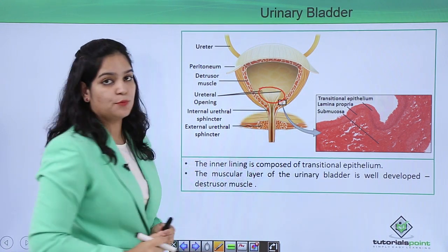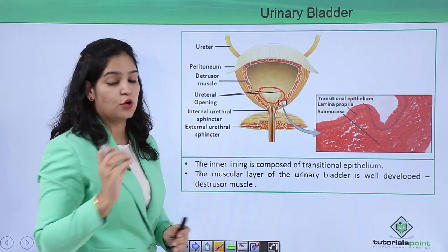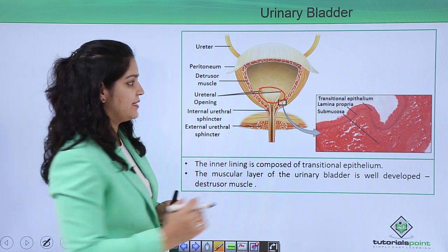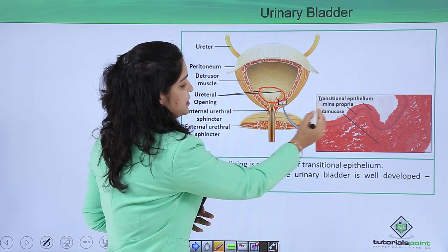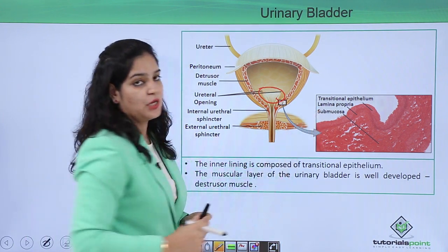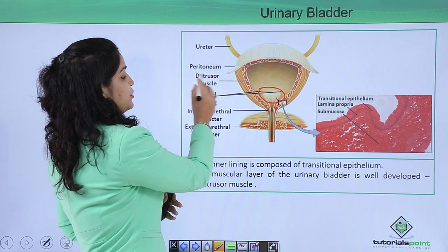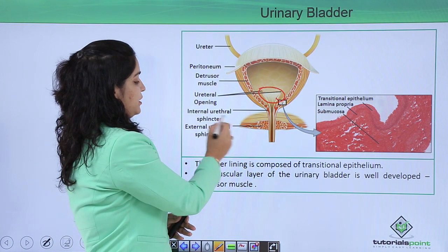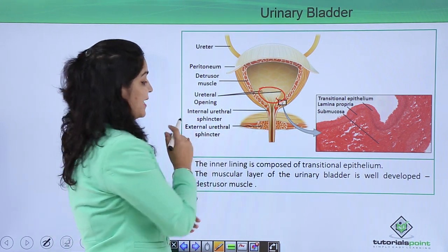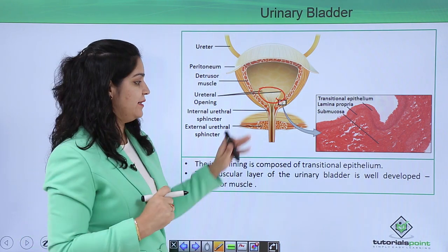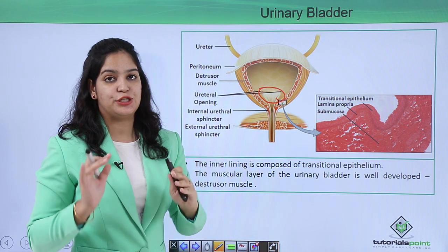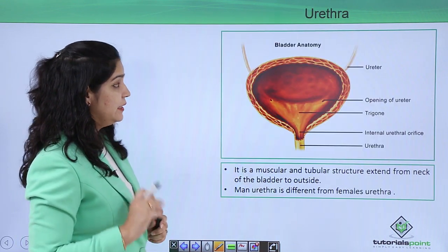Two sphincters are also present. The first is the internal urethral sphincter, which is made up of transitional epithelium that can easily expand or relax. In a cut section, you can see the transitional epithelium, then the lamina propria, and beneath it the mucosa. The external urethral sphincter is controlled by the nervous system as a voluntary muscle. The main function of the urinary bladder is to store urine.